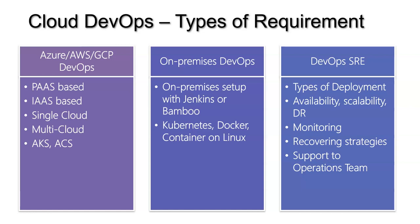If you further subcategorize into the cloud space, people may expect more knowledge in PaaS, and a few organizations may expect more in IaaS — infrastructure as a service. Single cloud or multi-cloud — they may expect AKS (Azure Kubernetes Service) or Azure Container Service. Similarly, AWS and GCP have their own Kubernetes and container services as PaaS offerings.